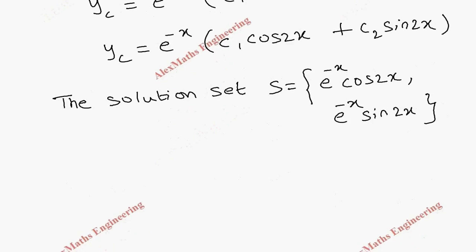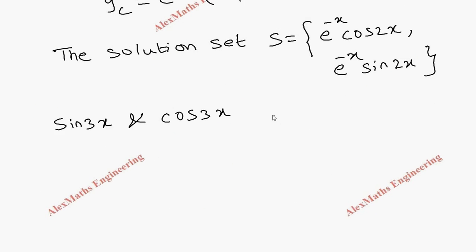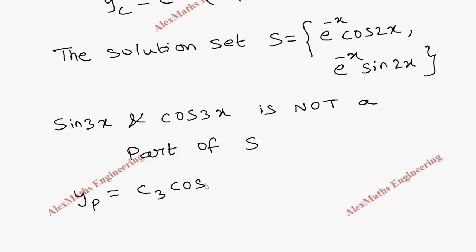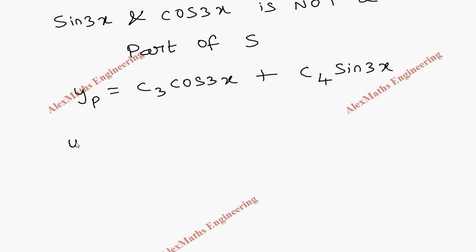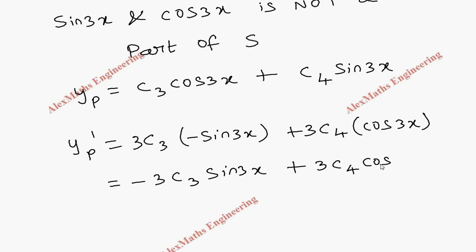On the right-hand side we have 6sin3x and 7cos3x. Since sin3x and cos3x are not part of the solution set, we assume the particular integral as C3·cos3x + C4·sin3x. Now we find its first derivative, which is −3C3·sin3x + 3C4·cos3x.